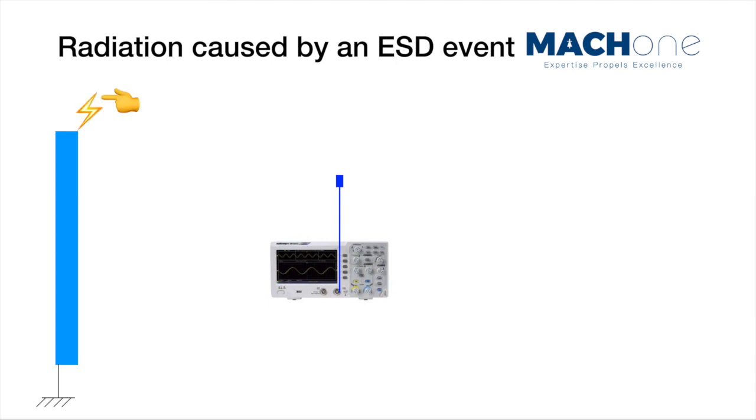What happens is when you have a lot of charge built up in your body, then you touch something which is low impedance, a very large DI over DT would occur and that current would need to go to the lowest impedance path, in this case, which is the Earth.